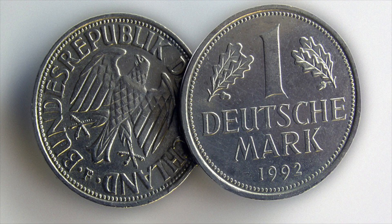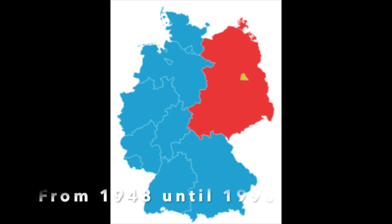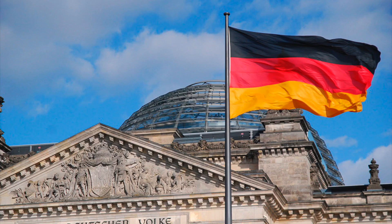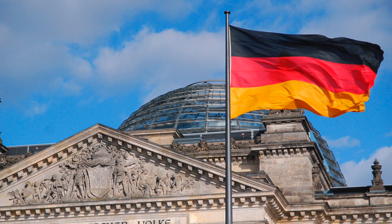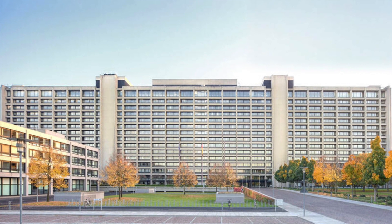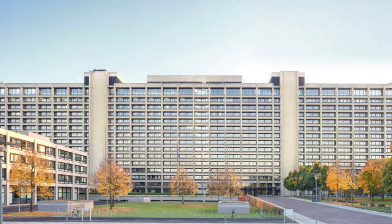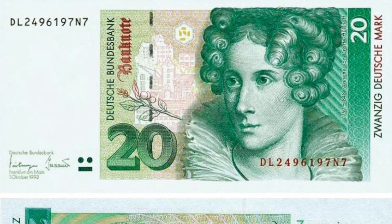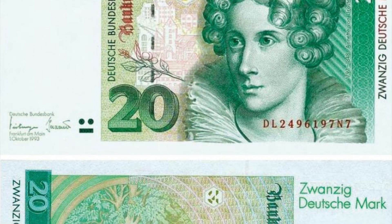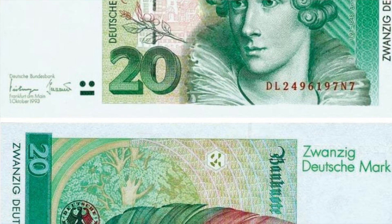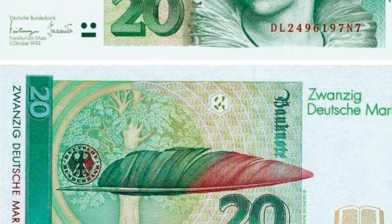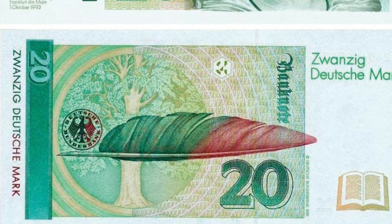The German Mark was the official currency of West Germany from 1948 until 1990, and later of unified Germany from 1990 until 2002. The German National Bank has guaranteed that all German Marks in cash form can be exchanged into euros indefinitely at any branch of the Deutsche Bundesbank — banknotes and coins can even be sent by mail. In 2012, it was estimated that about 13 billion Marks were still in circulation. On December 31st of 1998, one euro was 1.95 German Marks.